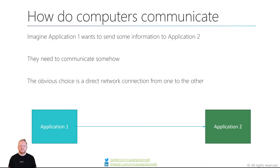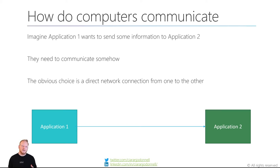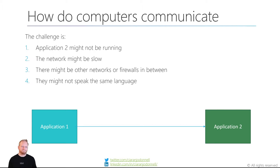The problem we're looking to solve is getting two computers to communicate. Imagine we've got application one running on one machine, application two running on another machine, and we need them to communicate somehow. Application one wants to send some information to application two. The default approach we'd typically take is trying to open a network connection, have application one access application two through some kind of IP address and port combination, open a TCP connection, and just push the data through. But it can actually be a little bit more challenging than that when we get into more distributed systems.